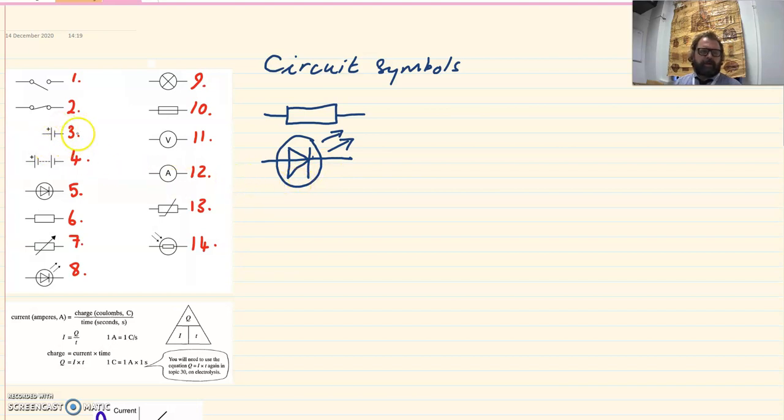You've got your standard symbols, number three, for a cell, and number four, for a battery, made out of a number of cells connected in series. Remember if you're working out the total potential difference of a battery, like number four, you'd add up the individual potential differences of the cells.